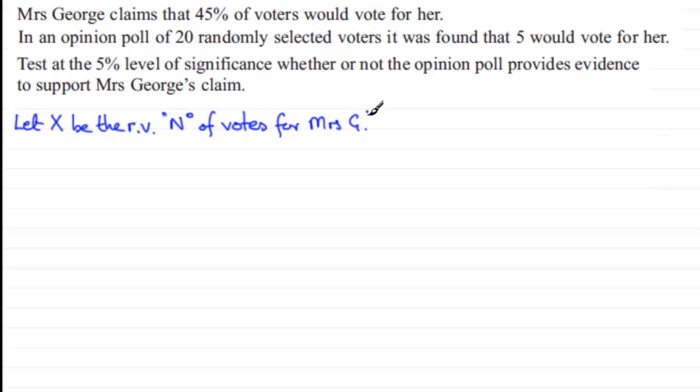We've got to decide what distribution a random variable X follows. X is distributed as a binomial distribution in this case because we've got a finite number of trials, 20, and we've got the possibility of two outcomes - a person will either vote for Mrs. George or not.